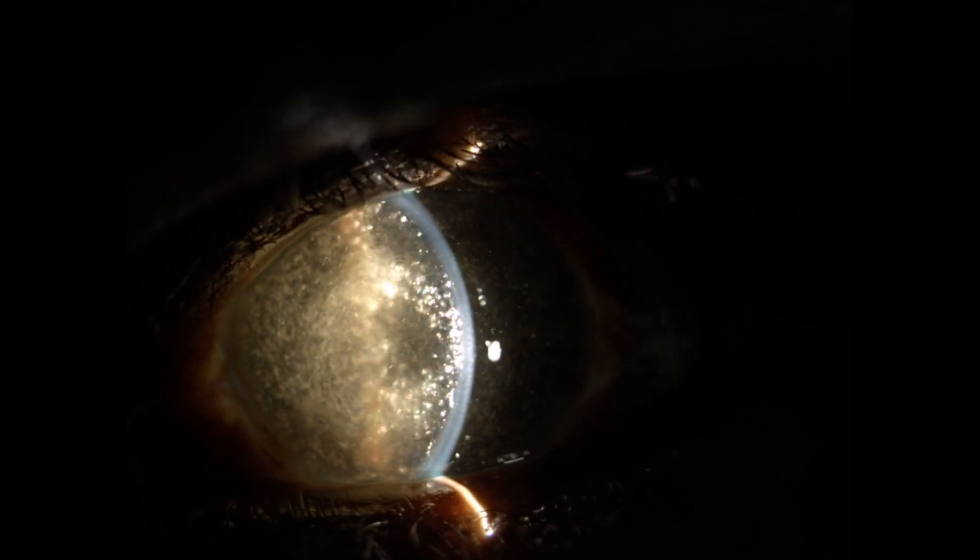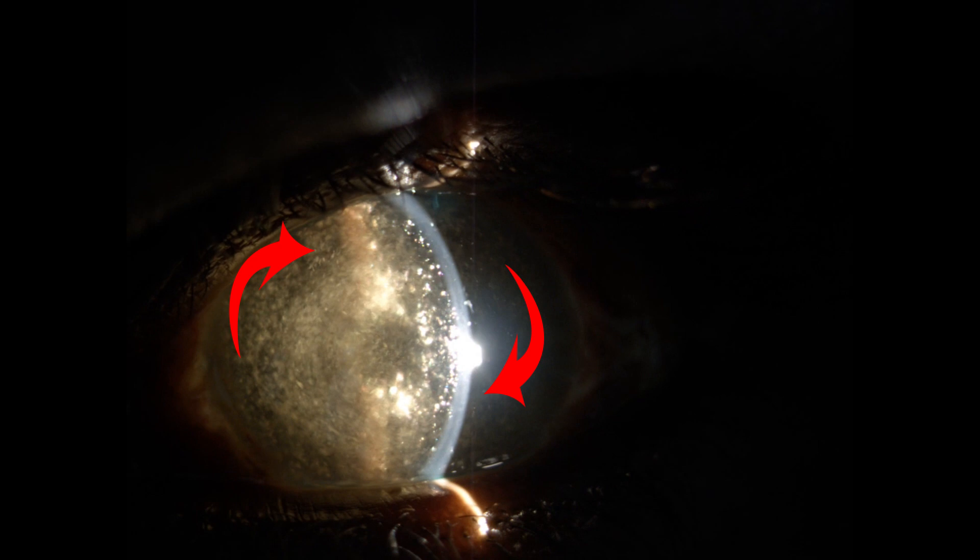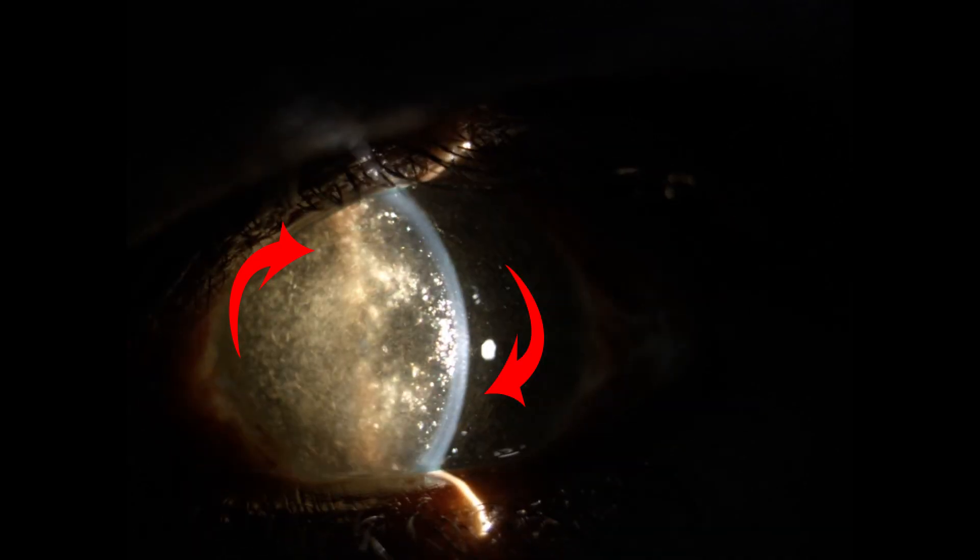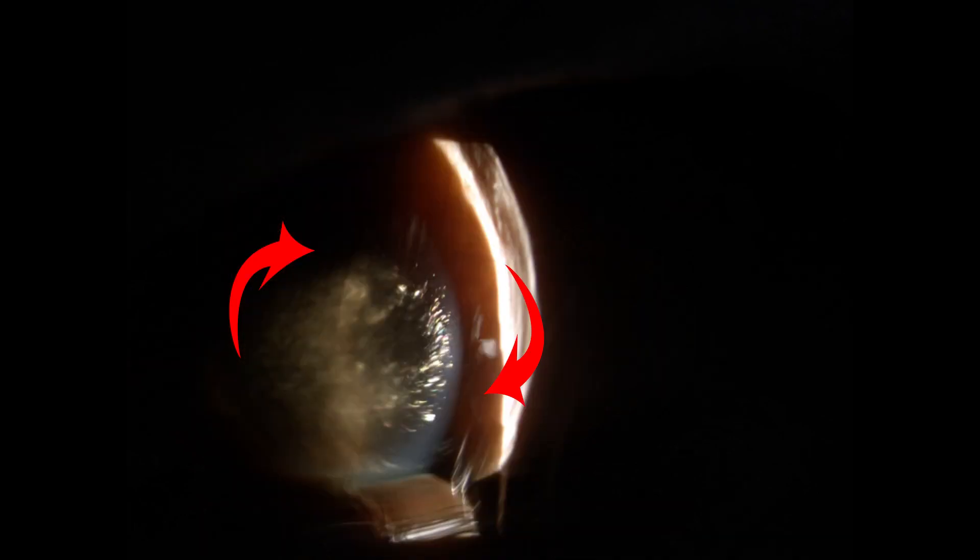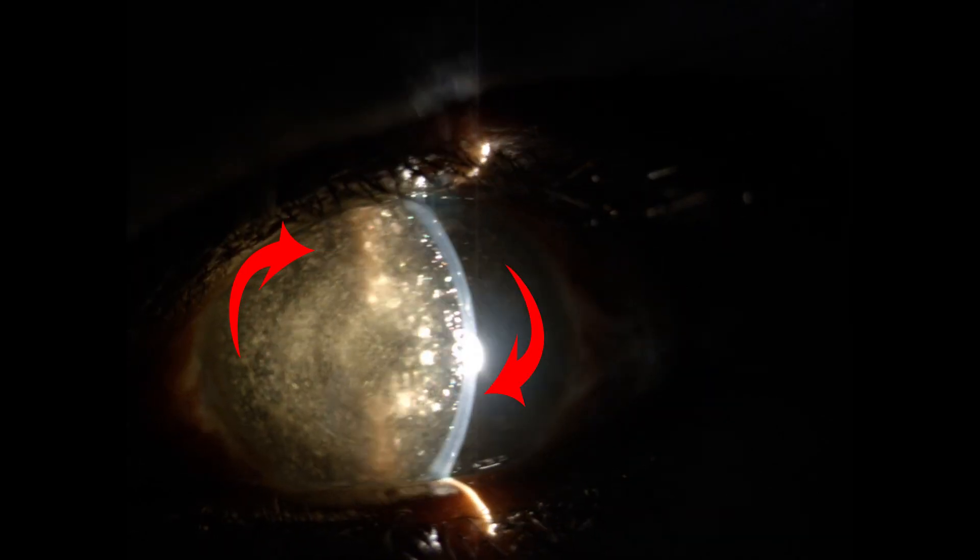we can clearly see aqueous moving down along the cooler cornea anteriorly and in the posterior part, it moves up along the warmer iris. Thus, it demonstrates the aqueous humor convection currents in AC.